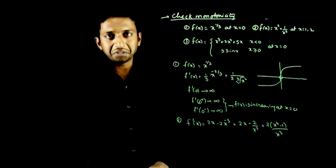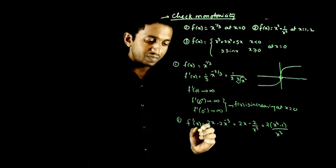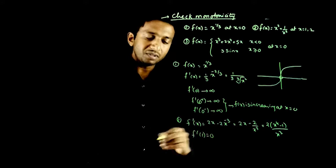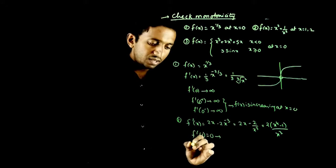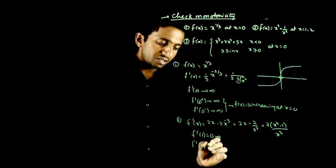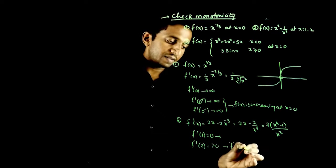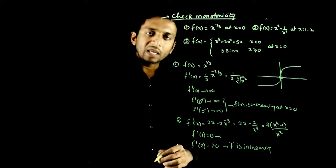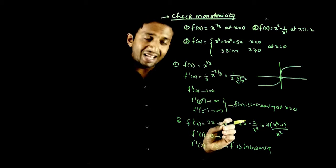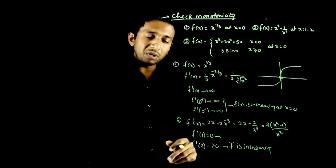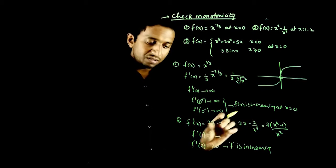That simplifies to (2x⁴ − 2) / x³, or equivalently (2(x⁴ − 1)) / x³. Now at x = 1: f'(1) = 0. This means the function has a stationary point at x = 1. Since f'(1) = 0, the function is neither increasing nor decreasing at that point. We need to go for one more differentiation.